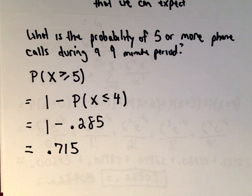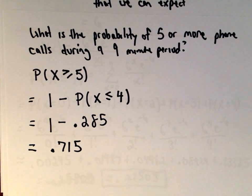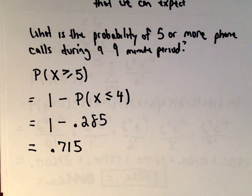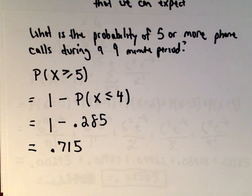Maybe this makes perfect intuitive sense to you — it definitely throws me off a little bit. That's why we have to be meticulous about it. I hope this example makes sense; if you want to see another Poisson distribution example, I'd be happy to do one.